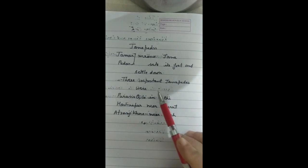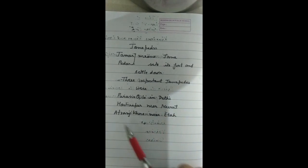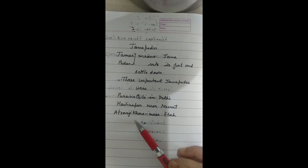Three important Janpadas were mentioned. Both Hastinapur and Atranji Khera are located in Uttar Pradesh.